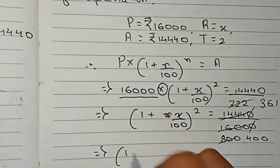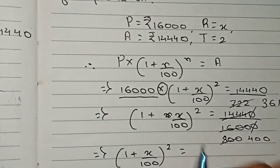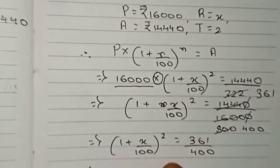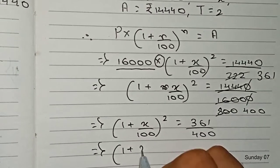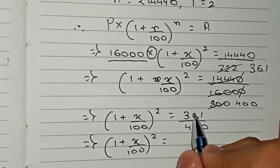So (1 plus x/100) to the power 2 equals 361/400. Now, this number we have to express in terms of a square.